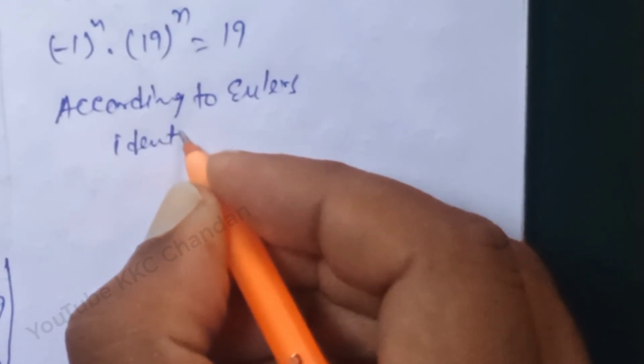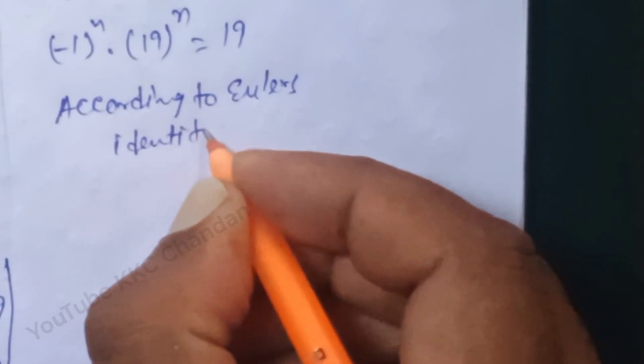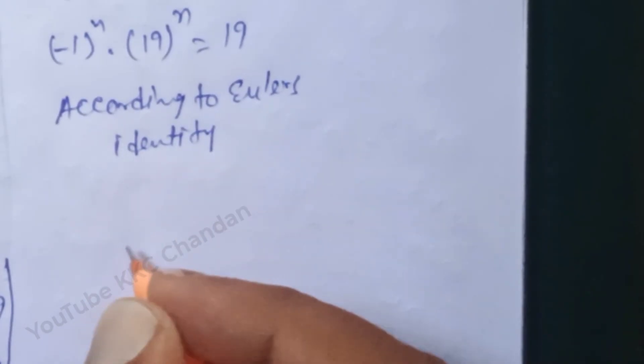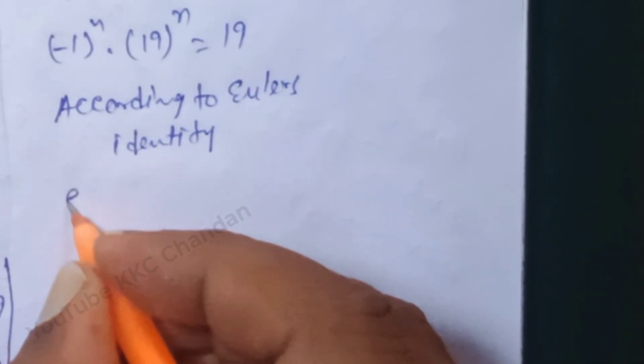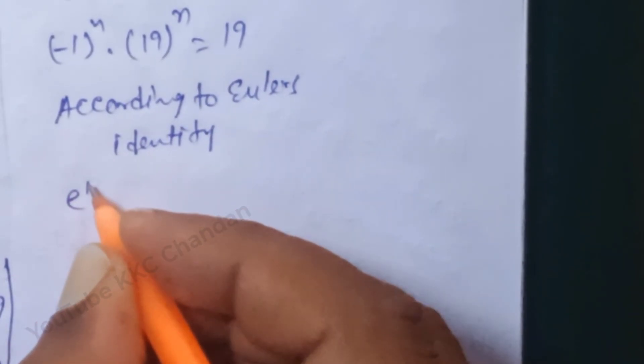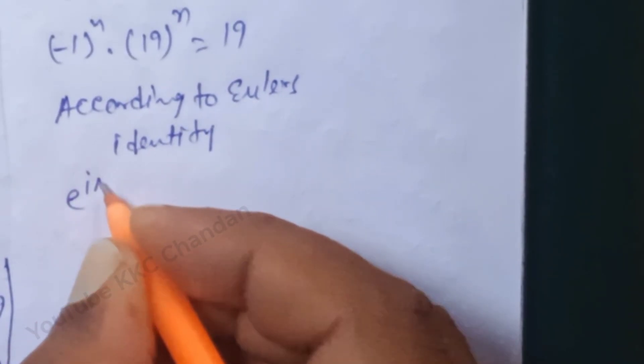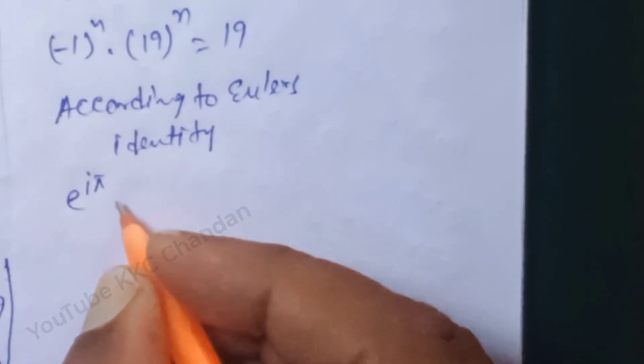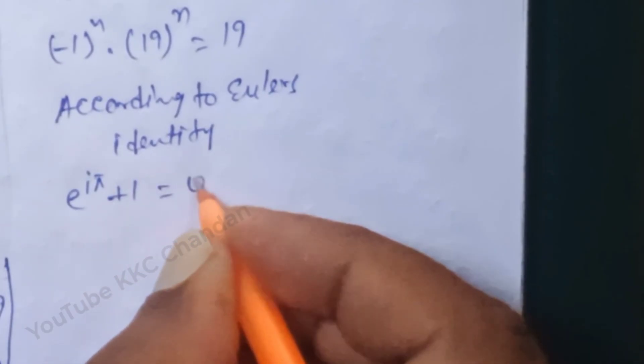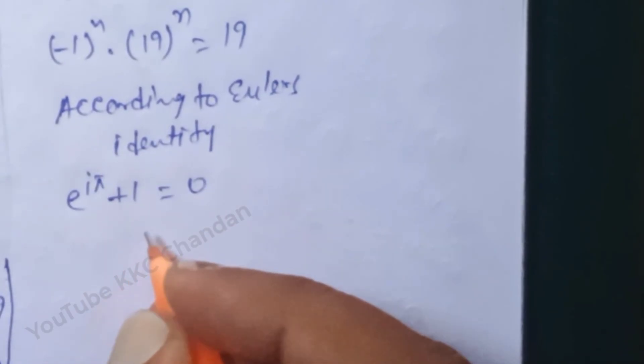The final answer is n = ln(19) / (iπ + ln(19)), using Euler's identity e^(iπ) = -1.